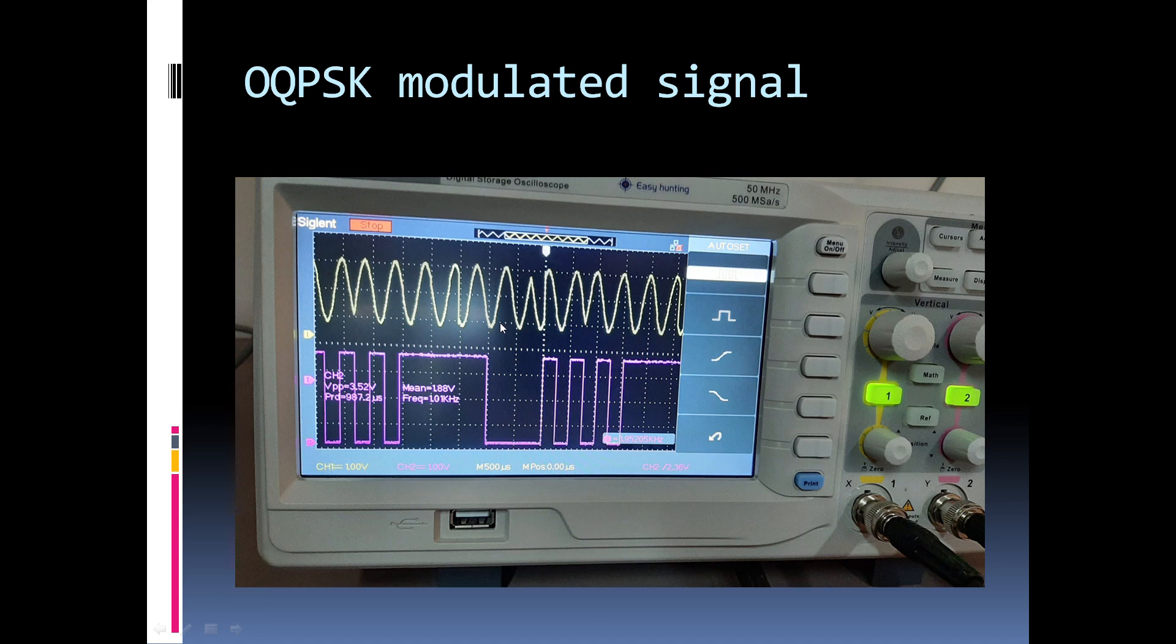Also, see the OQPSK modulated signal how it looks like. It looks more smooth compared to the QPSK signal. And please also note that here I have used a 16 bit pattern compared to the 8 bit pattern that I used for QPSK.